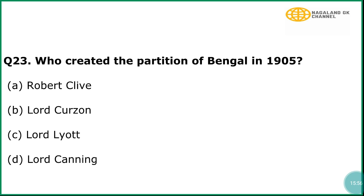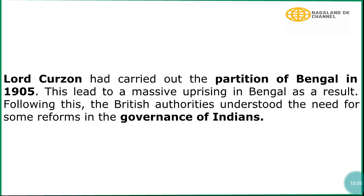Question number 23: Who created the partition of Bengal in 1905? The correct answer is option number B, Lord Curzon. In explanation, Lord Curzon had carried out the partition of Bengal in 1905. This led to a massive uprising in Bengal. As a result, the British authorities understood the need for some reforms in the governance of Indians.